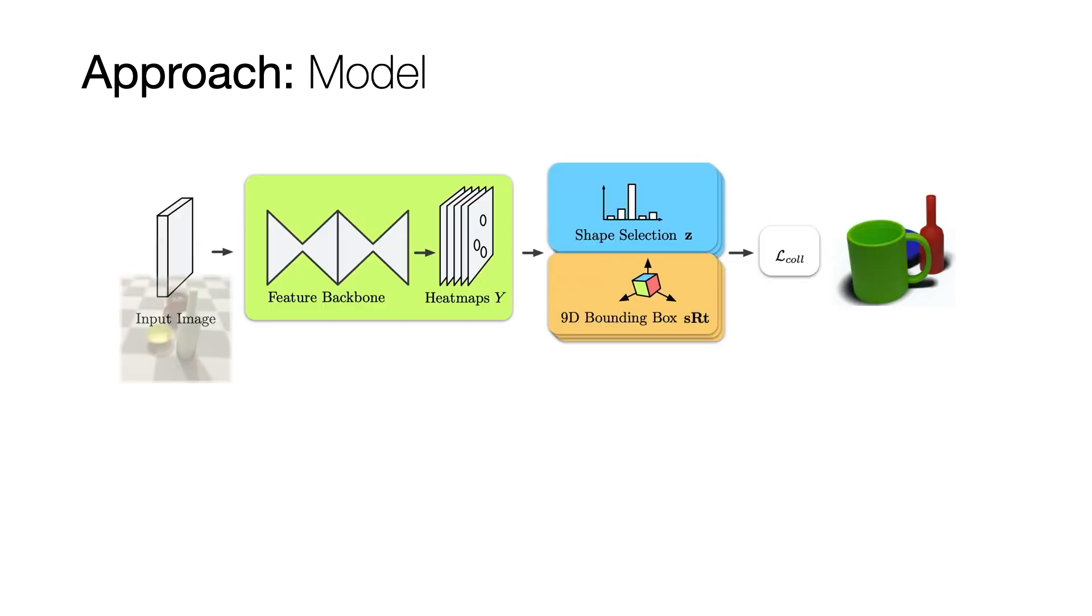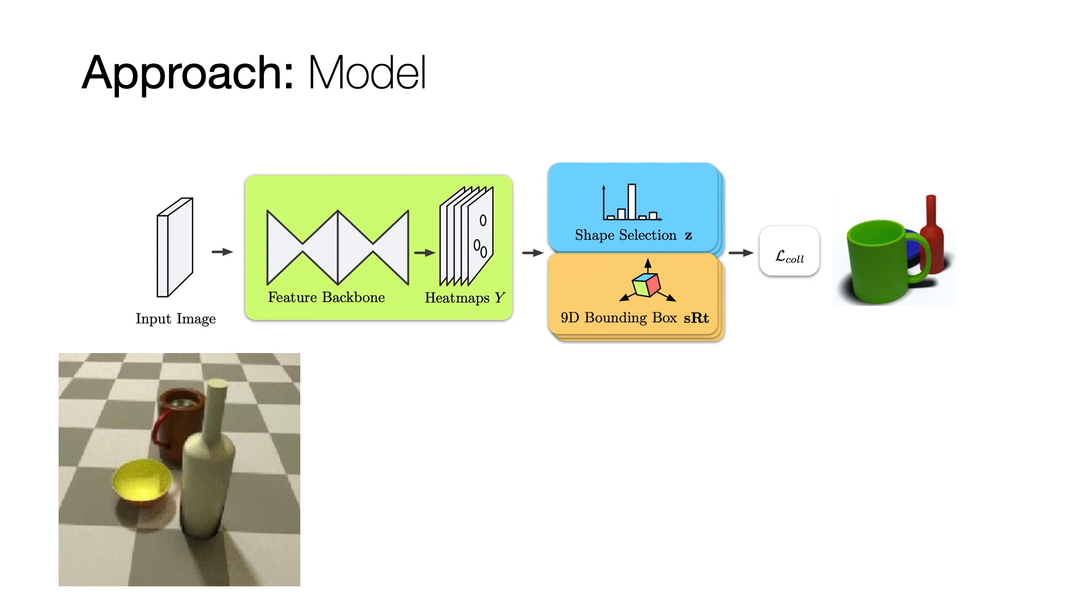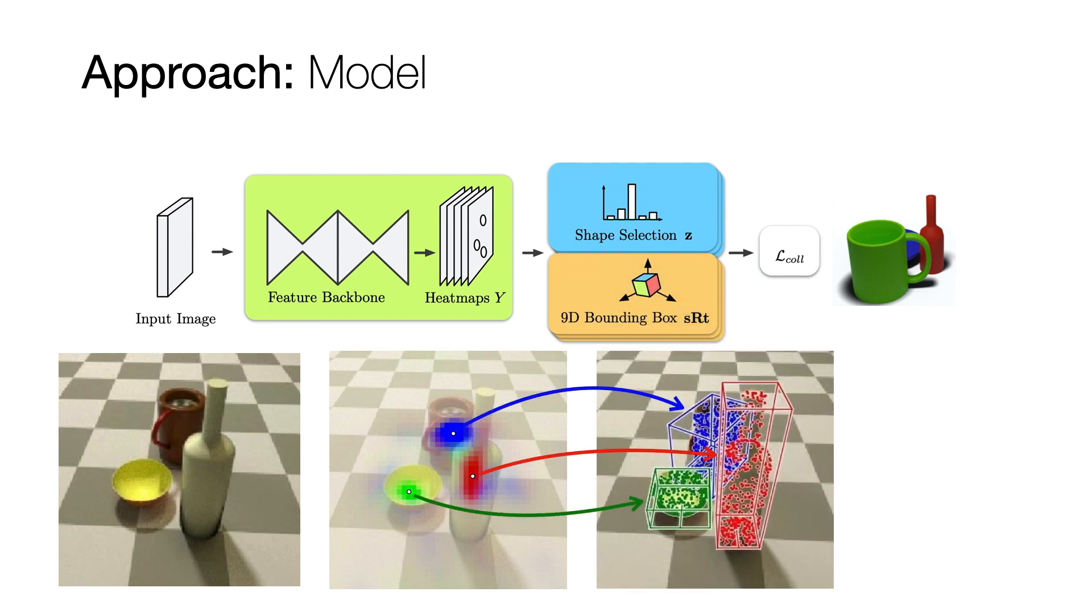Specifically, given a single RGB image and building on CenterNet, our method uses a keypoint detector to localize center points and jointly predicts for every center point in the scene a shape and a bounding box. All this in a single-stage network.